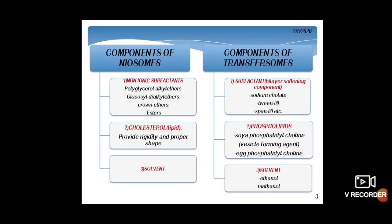Components of Niosomes include non-ionic surfactant, cholesterol, and solvent. Non-ionic surfactants used include polyglycerol alkyl ether, crown ether esters, etc. Cholesterol provides rigidity and maintains the proper shape of Niosomes. Niosomes can entrap both hydrophilic and lipophilic drugs either in the aqueous or vesicular membrane. Niosomes are preferred over liposomes because they exhibit higher chemical stability, better entrapment efficiency, improved bioavailability, and are more economical.